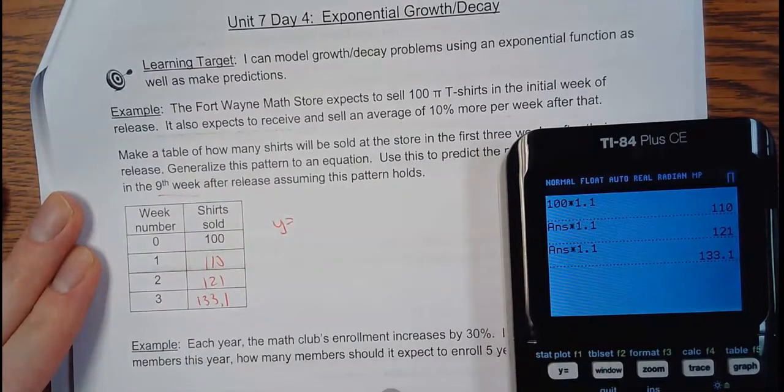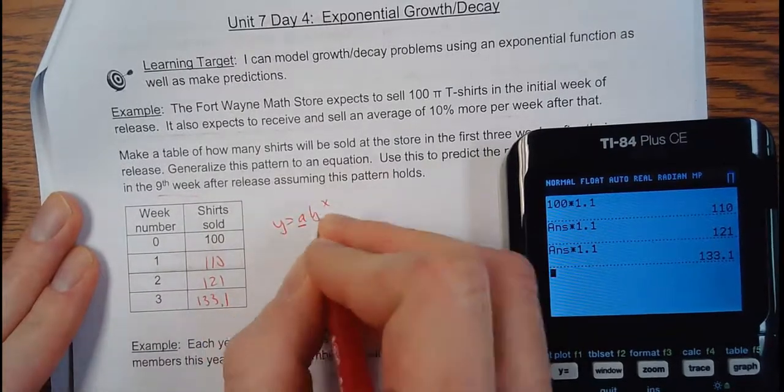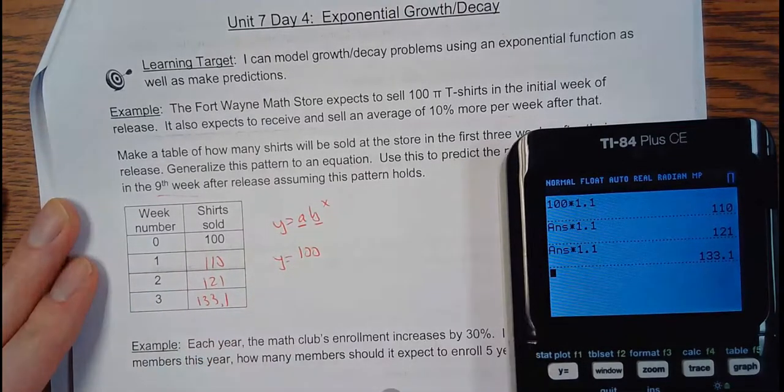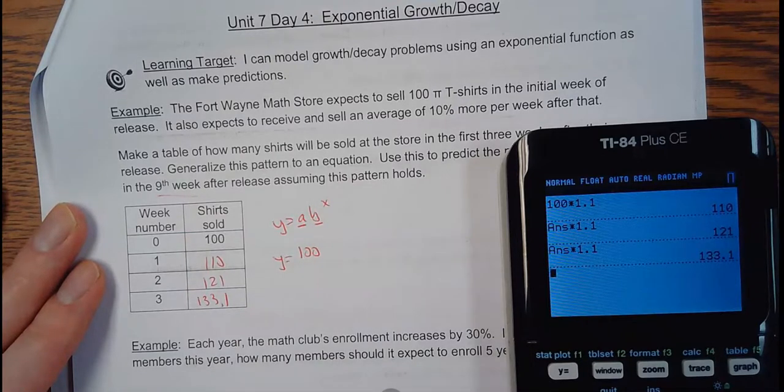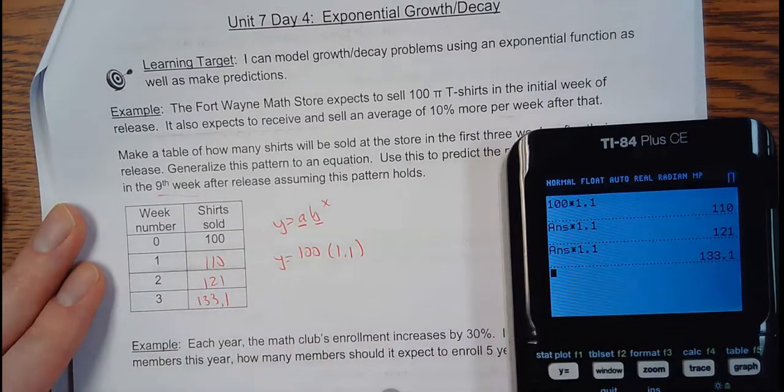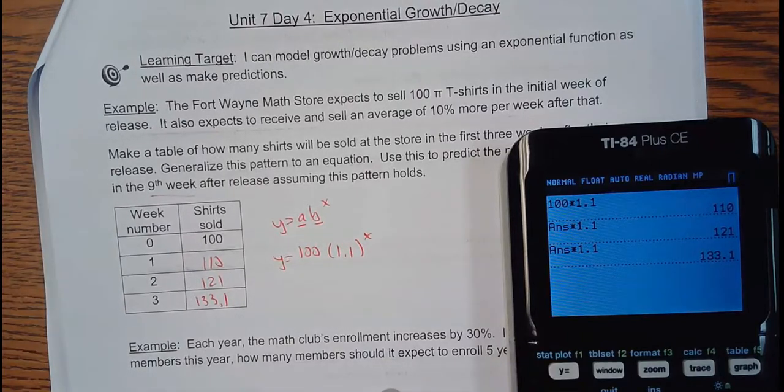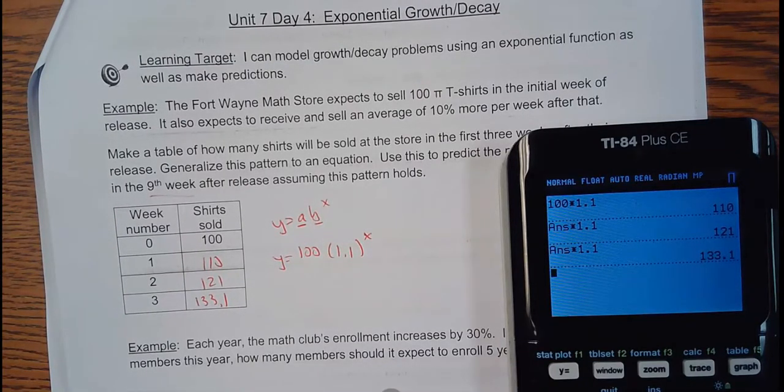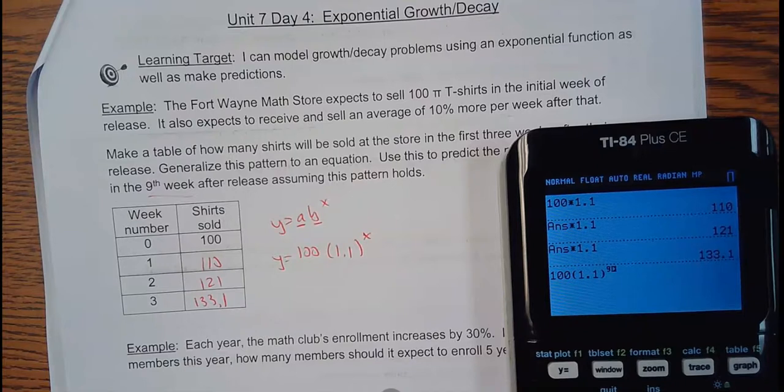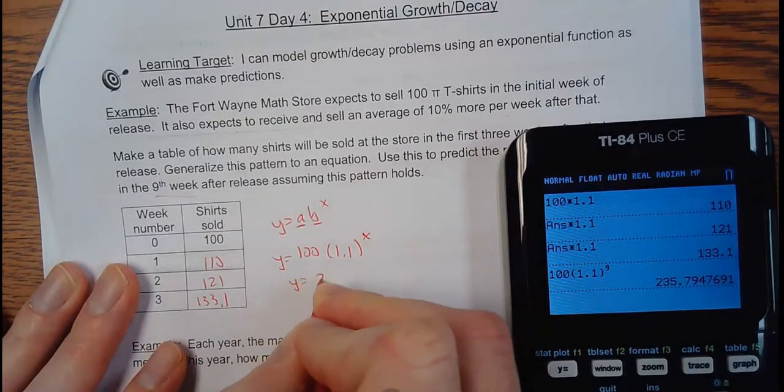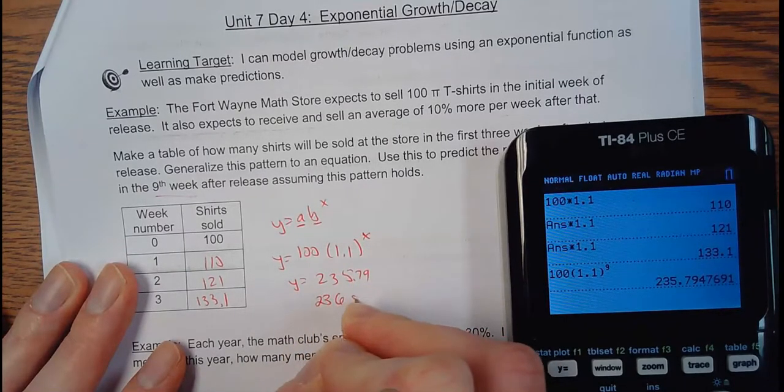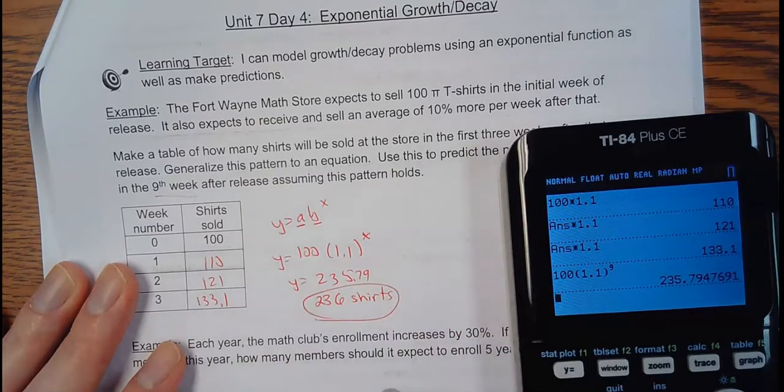What's your initial value? Remember, A times B to the X. A is the initial value. B is how it's changing. So, the A on this, my initial value, is 100. And then, my growth factor is 1.1, because it's going up 10%. So, a 10% increase every week. If I want to find the ninth week, I got to plug nine in. So, I'm going to take 100 times parentheses 1.1 raised to the ninth power. So, it looks like I'm selling 235.79, we'll say 236 shirts.